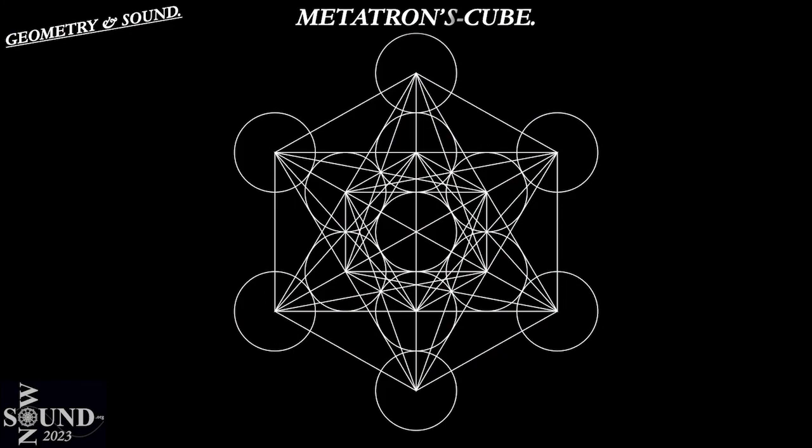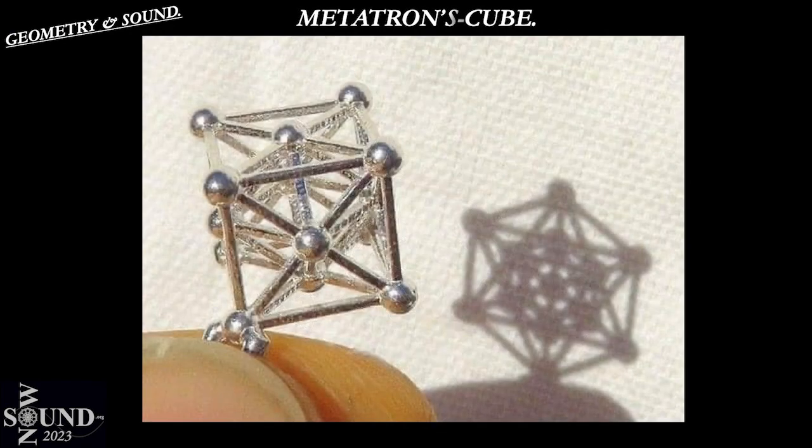As the saying goes: as above, so below — on earth as it is in heaven. These geometric forms cast a shadow on our reality, forming our reality. There is Metatron's Cube in its 3D form, and it's casting a shadow in the 2D form we see as Metatron's Cube.